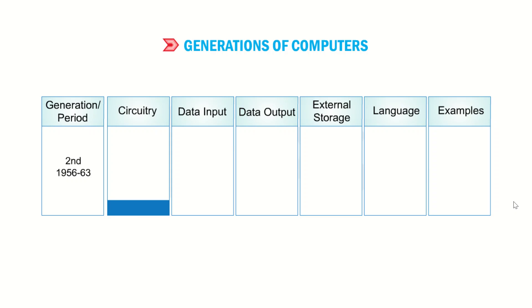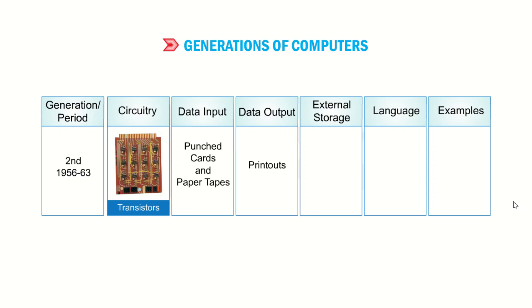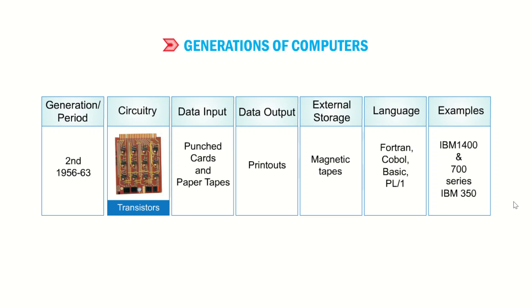Second generation computers, from 1956 to 1963, had circuitry of transistors. Data input and data output, and external storage was on magnetic tapes. Languages used were Fortran, COBOL, BASIC, and PL/1. Examples include IBM 1400, IBM 700 series, and IBM 350.